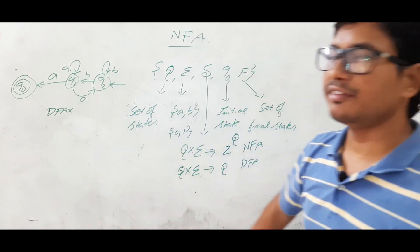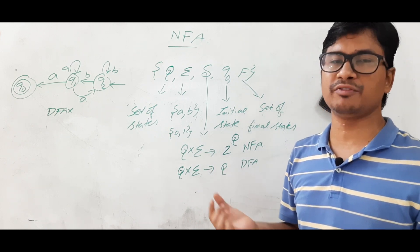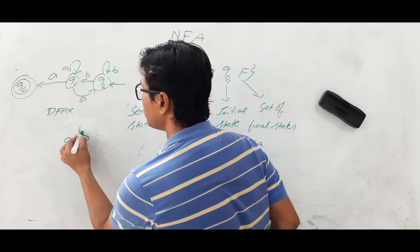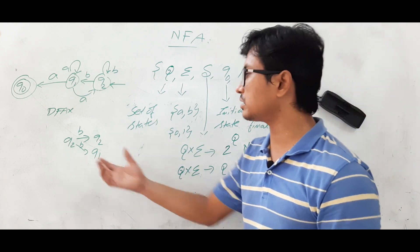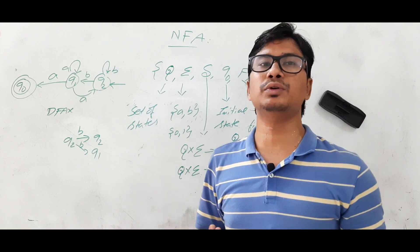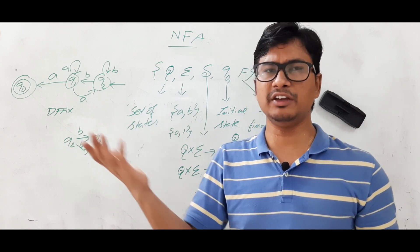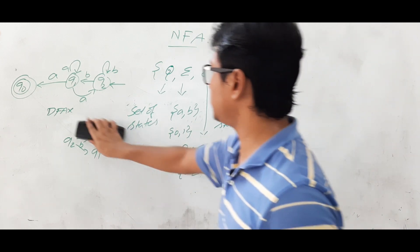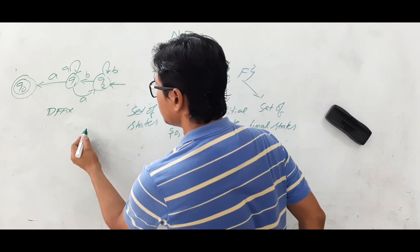Why is it called an NFA — non-deterministic? Because if you see q₂ on 'b', you can go to q₂ or you can go to q₁. So there is confusion: should I go to q₂ or should I go to q₁? That is an uncertainty. In a DFA you have only one possibility, so you always know where to go. Having two possibilities makes it non-deterministic.